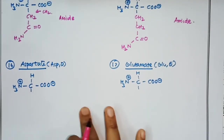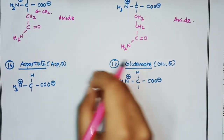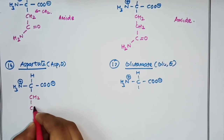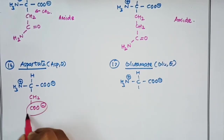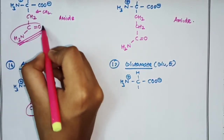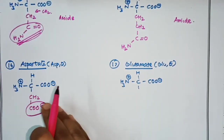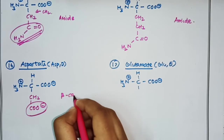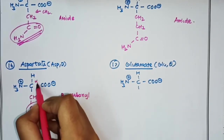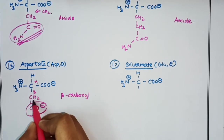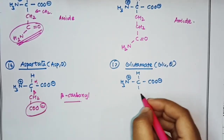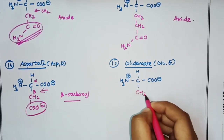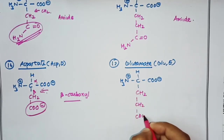The next two are aspartate and glutamate, which are the acid forms of asparagine and glutamine respectively. In aspartate the R group is –CH₂–COO⁻, a beta-carboxyl group (COO⁻ attached to the beta carbon). Glutamate has a gamma-carboxyl group; you just insert a CH₂ into aspartate to get glutamate.